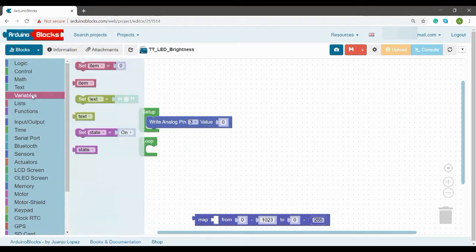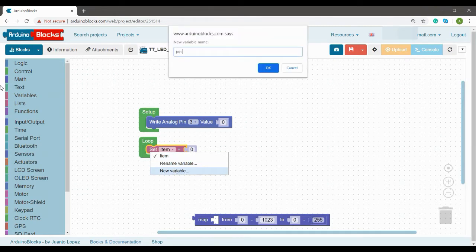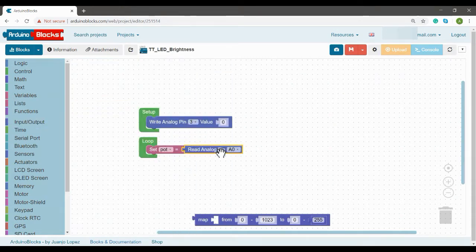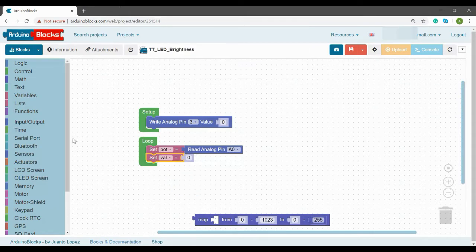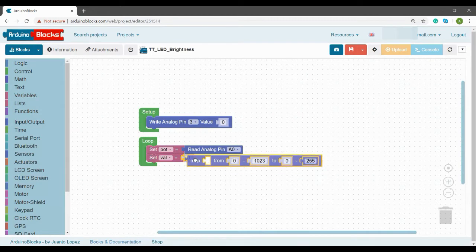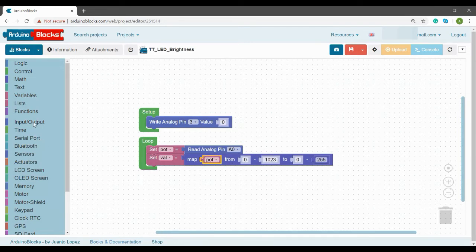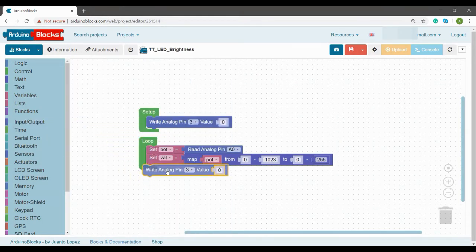First we are taking set block to set one variable, naming pot to store analog pin's analog node value. In the next step another variable val is set where the mapped value from 0 to 1023 to 0 to 255 will store. Made to say 1023 maximum value of pot will now be stored as 255 in variable val. Then finally we will write val to pin 3 to control the brightness.